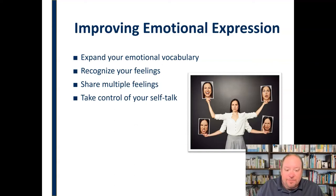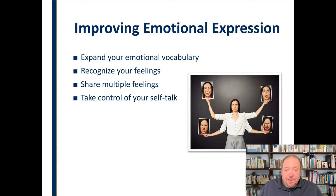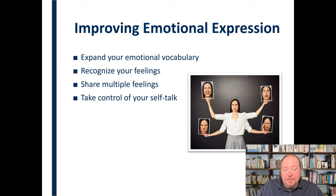We also need to take control of our self-talk — how we talk to ourselves about these emotions. When we experience emotions physiologically and they're triggered within us, what do we tell ourselves about it? Do we let things spiral out of control without managing that self-talk? We need to take control and understand that we are in charge of our emotion. That emotion was triggered by an event, but we control how we express and manage it, and that starts with how we process it cognitively.